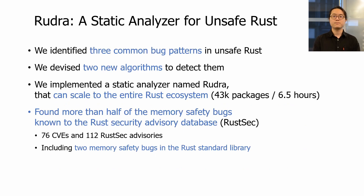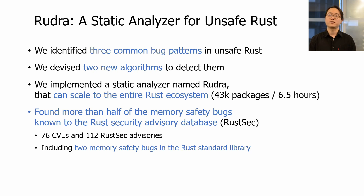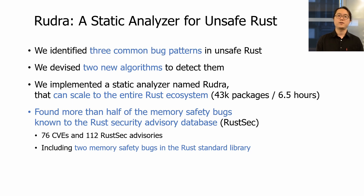In this talk, we introduce Rudra, a static analyzer for unsafe Rust. We identified three common bug patterns in unsafe Rust by reviewing known unsafe Rust bugs and auditing famous Rust packages. We devised two new algorithms to detect these bugs and formulated them as a static analyzer named Rudra that can scale to the entire Rust ecosystem. So far, Rudra found more than half of the memory safety bugs known to the Rust Security Advisory Database — bugs found in code written and extensively reviewed by Rust experts.